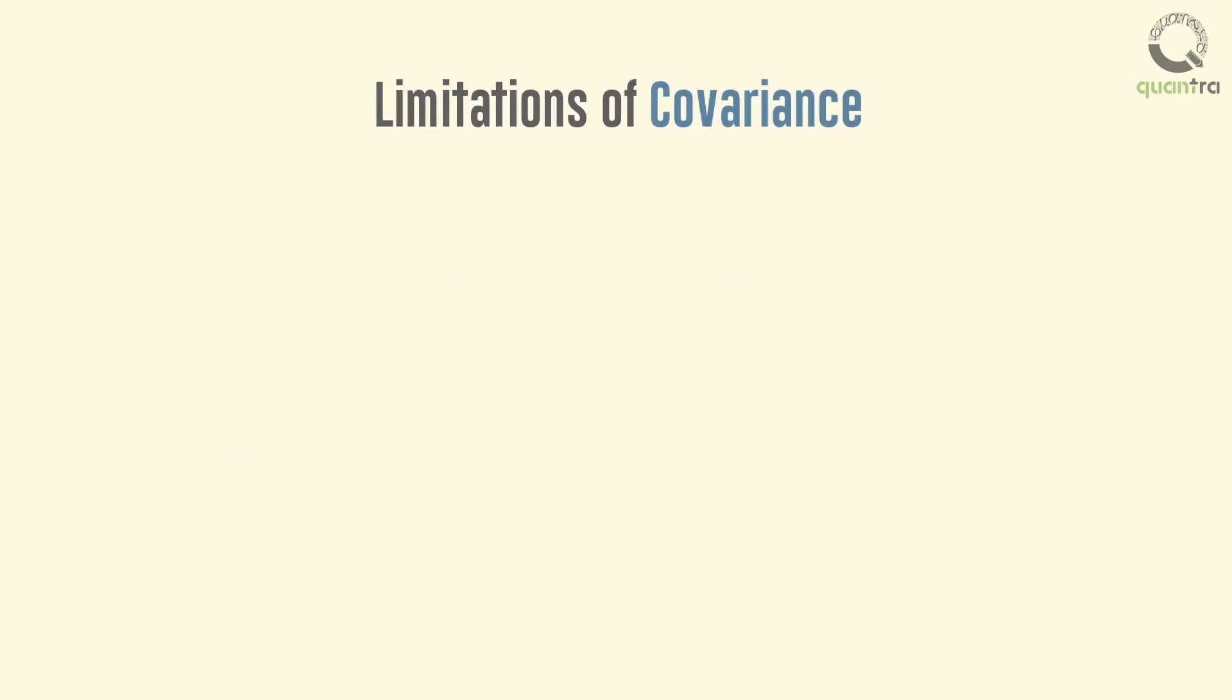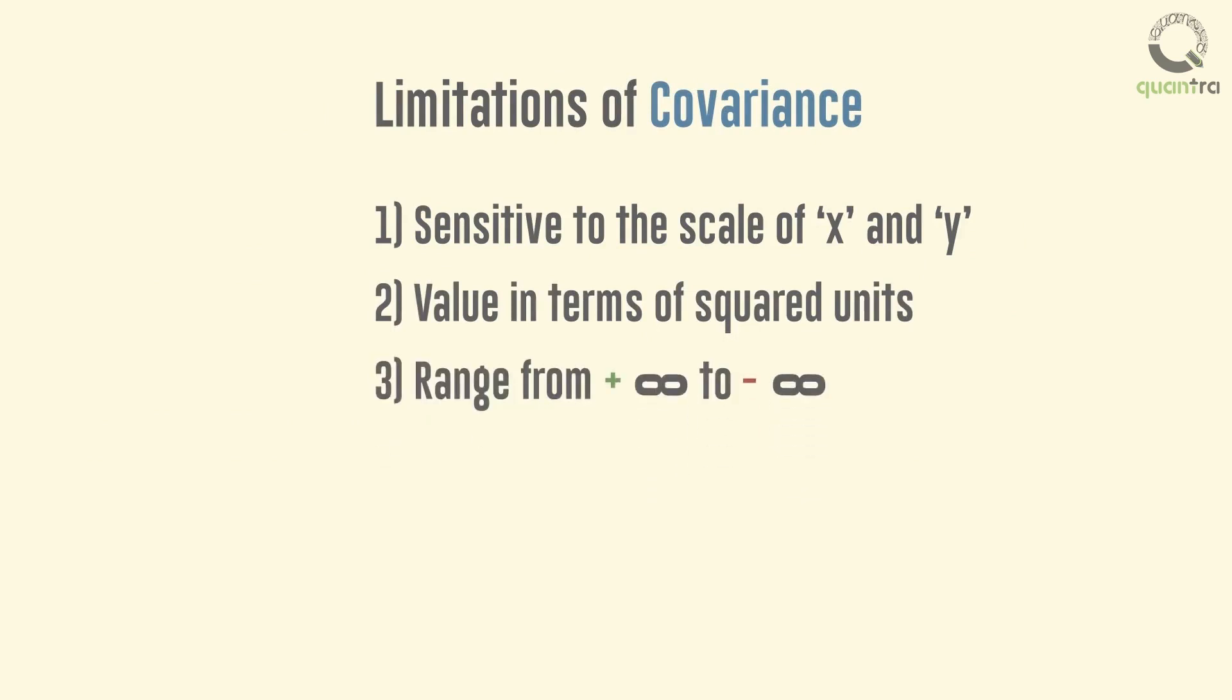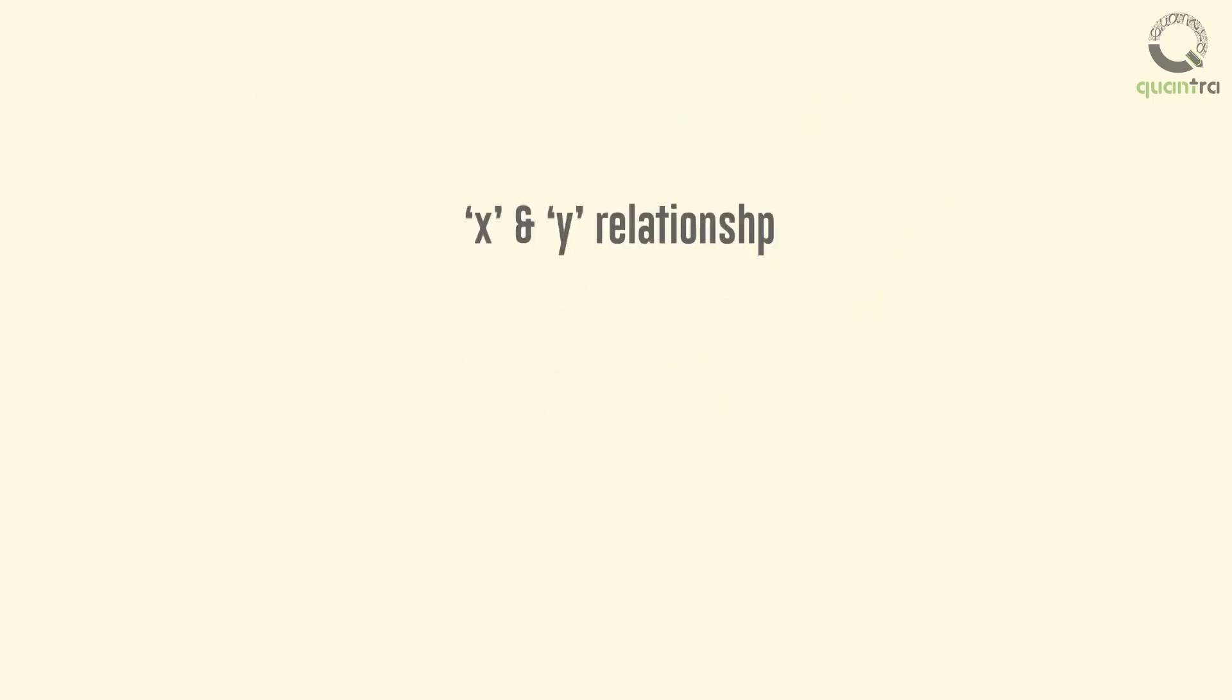But covariance has its limitations. It is sensitive to the scale of the variables, and its value is in terms of squared units, which may range from positive to negative infinity, hence making it difficult to compare two covariance values. To overcome these limitations, we calculate the correlation coefficient of these variables after calculating the covariance.